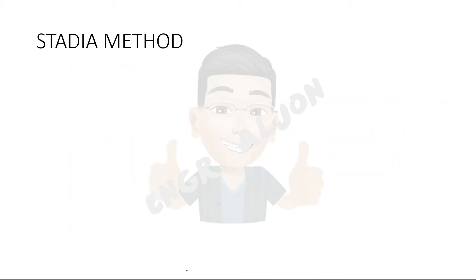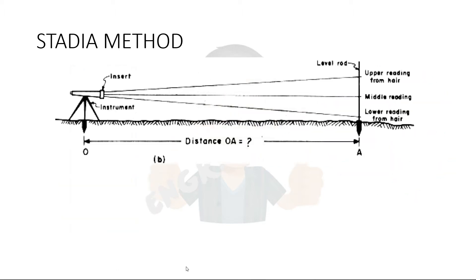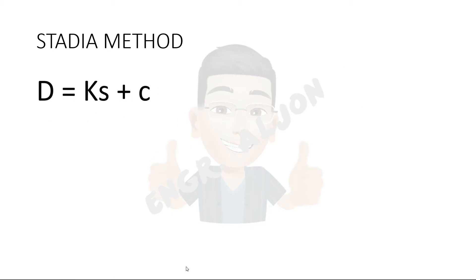In this method, you will get three readings: the upper, middle, and lower readings. The middle reading is used for elevations, while the upper reading and lower reading are used for computing the distances. The distance from the center of the instrument to the stadia rod is defined by D equals KS plus C.